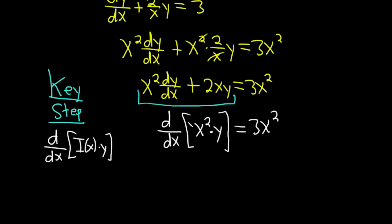Again, it's always going to be your I(x), which is x², times your unknown function, and you always have a derivative. You should always check. Recall the product rule says if you have f times g, it's the derivative of the first times the second plus the first times the derivative of the second.